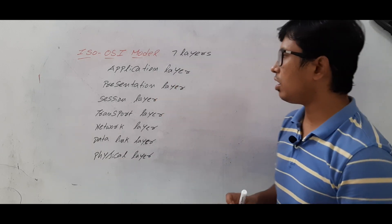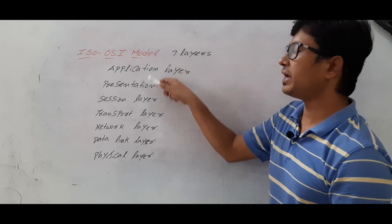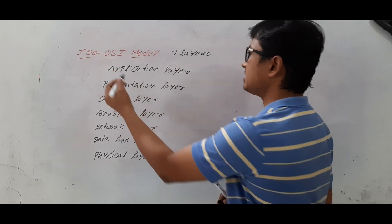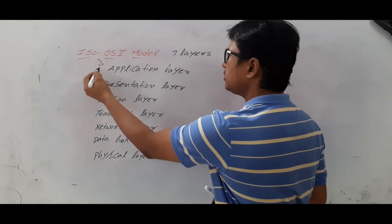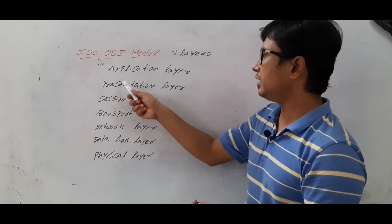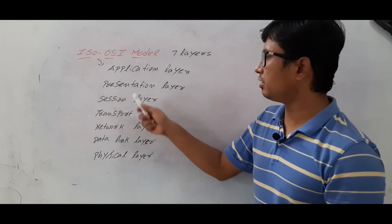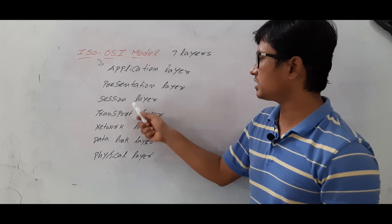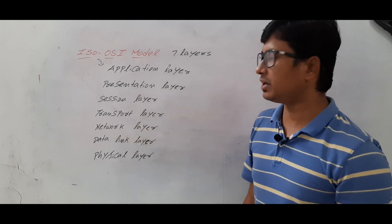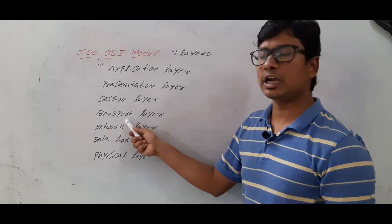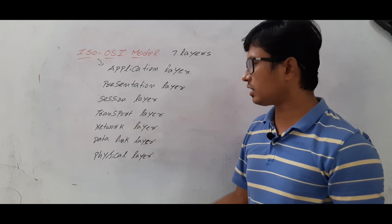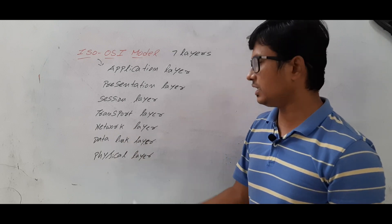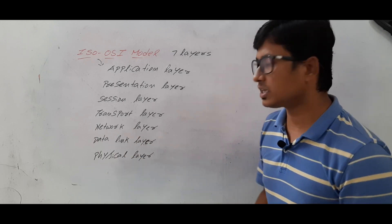All the layers should be arranged in a sequence. From the sender point of view, because the sender will send a message: first it will go to the Application layer, then Presentation layer, then Session layer, then Transport layer, then Network layer, then Data Link layer, and finally to the Physical layer.